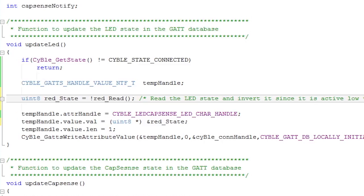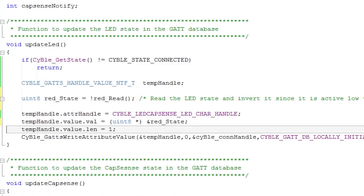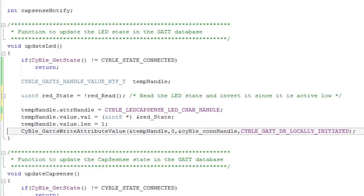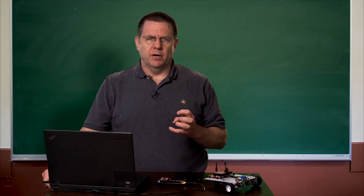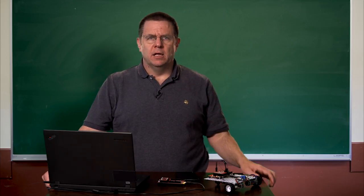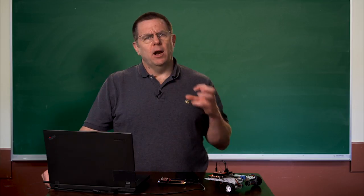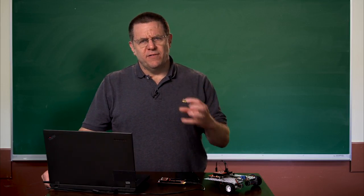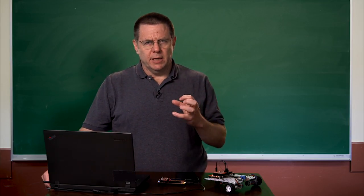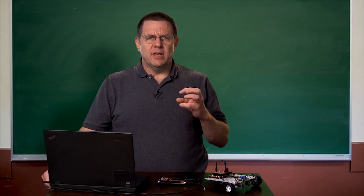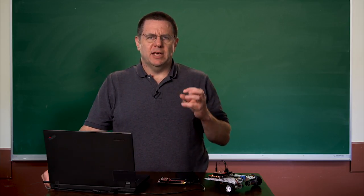The next thing you do is tell it that it's one byte. And then finally, you actually write it into the GATT database with the cyble_gats_write_attribute_value function. So now we have a handy dandy helper function called UpdateLED. This function can be called anywhere in your source code, and all it does is, if it is connected via BLE, it reads the state of the LED and writes it into the GATT database.